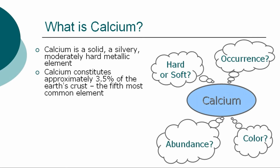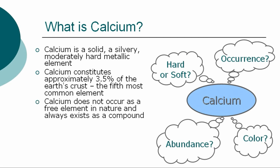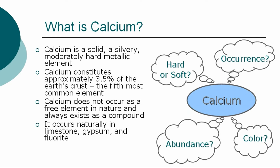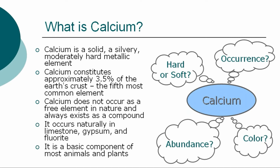It constitutes approximately 3.5% of the Earth's crust and is the fifth most common element. Calcium does not occur as a free element in nature and always exists as a compound. Its compounds are used to make plaster, quicklime, cement, and electronic materials. It occurs naturally in limestone, gypsum, and fluorite. Calcium is a basic component of most animals and plants.